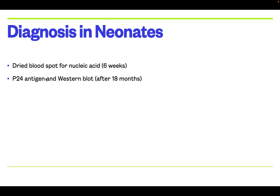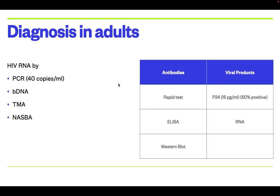Neonates can also be diagnosed by P24 antigen or Western blot assay after 18 months. Now, the diagnosis in adults. Adults can be diagnosed by antibodies or viral products. Antibodies are diagnosed by either rapid test, ELISA test, or Western blot test.